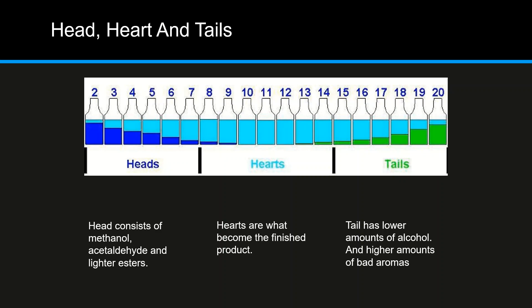Eventually the heart distillate will steadily take on an unpleasant aroma and flavors, developing some bitterness because the continuous heat makes it unpleasant. The distillate at this point is called the tail. It has an increasingly lower amount of alcohol and higher amount of bad aromas due to growing amounts of fusel alcohol coming from the still. Just like the heads, the tails are either disposed of or redistilled to collect more alcohol from them. You can see in the diagram how heads, hearts, and tails are shown.